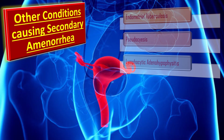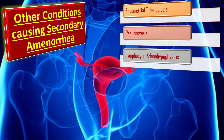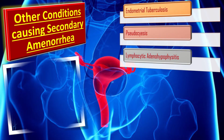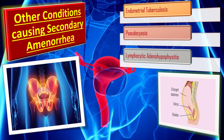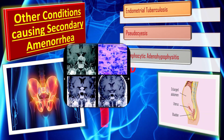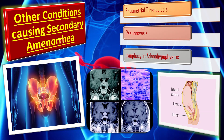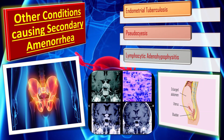Other conditions which cause secondary amenorrhea include endometrial tuberculosis, pseudocyesis, and lymphocytic adenohypophysitis.